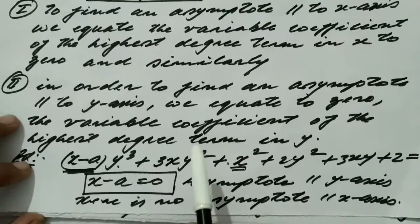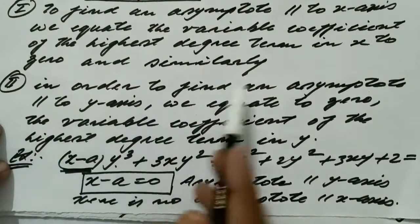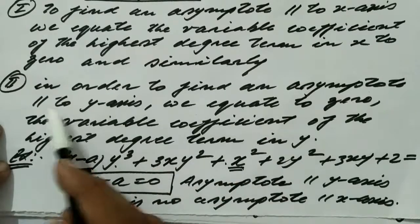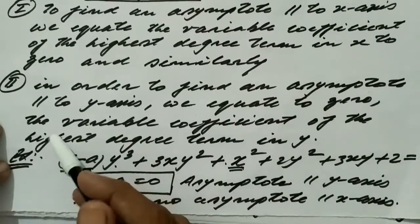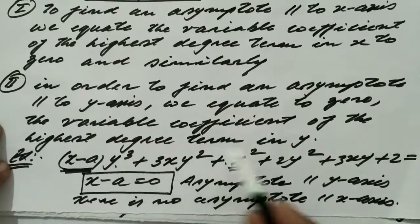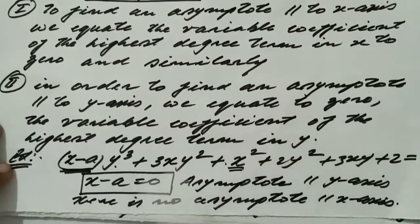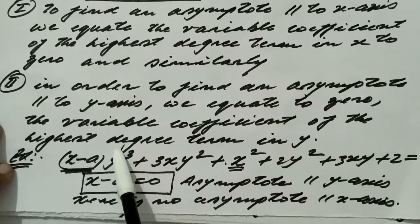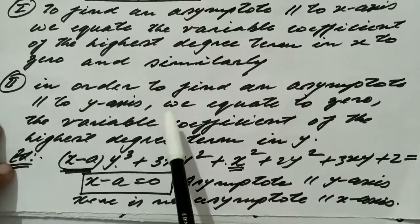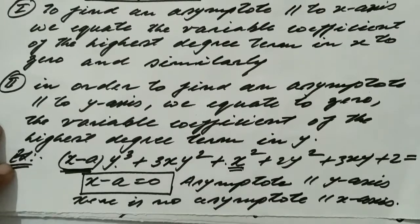In the same way, to find an asymptote parallel to the y-axis, we equate to zero the variable coefficient of the highest degree term in y. If the coefficient of the highest degree term in y is constant, there is no asymptote parallel to the y-axis.